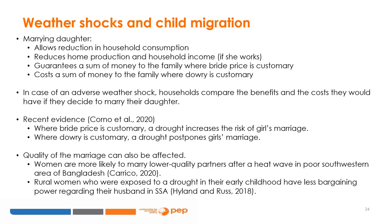As discussed before, marrying a child can be a strategy to insure against negative consequences of climate-related shocks when child marriage implies relocation to a different geographical area. More generally, child marriage could be influenced by the occurrence of a weather shock in different ways. In case of an adverse weather shock, parents could decide to marry a child — more often a daughter — to reduce household consumption. If a child relocates to the spouse's household, their family has one less mouth to feed. On the other hand, losing a member potentially reduces home production and household revenue if that person was engaged in the labor market.